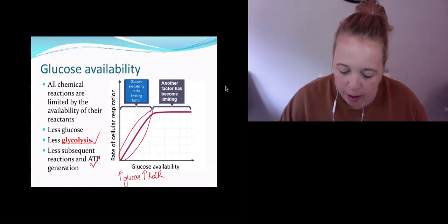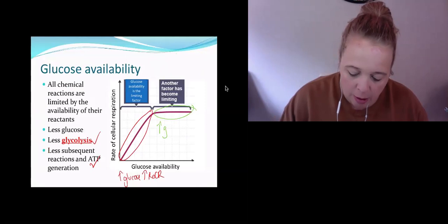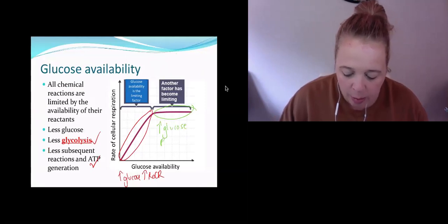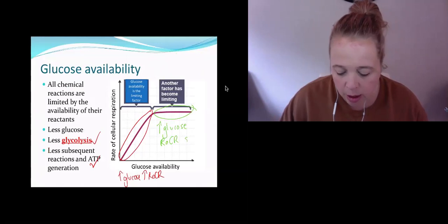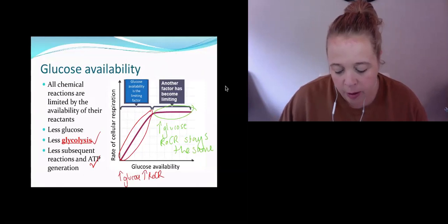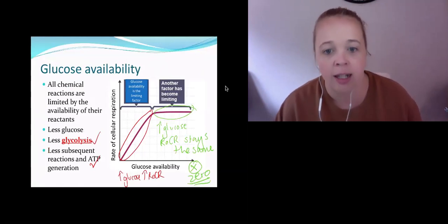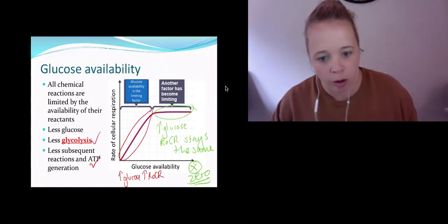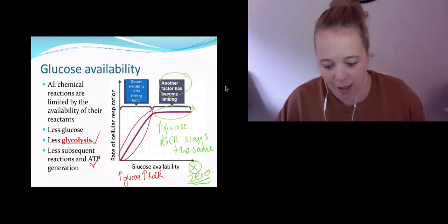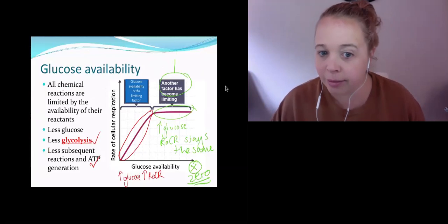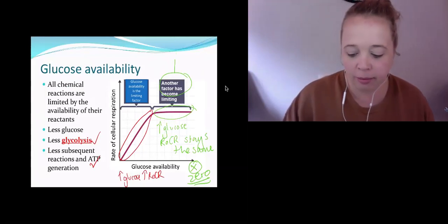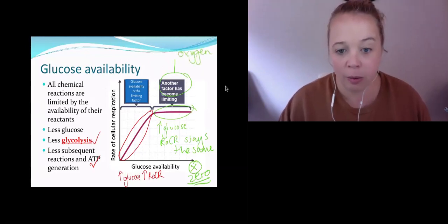When you get up to a certain point, at this stage up here, you keep increasing your glucose concentration, but your rate of cellular respiration stays the same. It's really important that we don't write it's zero, because it's not zero, it's actually a high rate, but it's staying constant no matter how much more glucose you give it. That must mean that another factor is limiting it. I'm hoping that you came up with oxygen, which we just talked about—oxygen concentration, and also temperature.